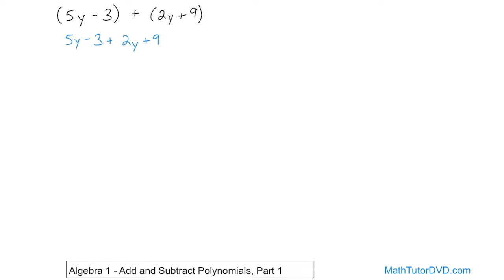We're looking and hunting for like terms. Here we have 5y and here we have 2y. Remember, terms are like if they contain the same variables. This has a y and this has a y, and they both have numbers in front, so we're able to add those numbers because they're both talking about the same variable. What is 5 plus 2? Don't let the subtraction scare you — that subtraction applies to the 3. This is a positive 5y and this is a positive 2y, so we add them normally. 5 plus 2 is 7, so you're going to get 7y.